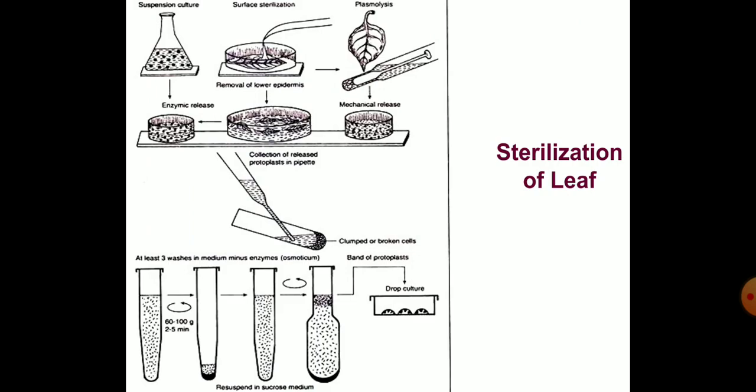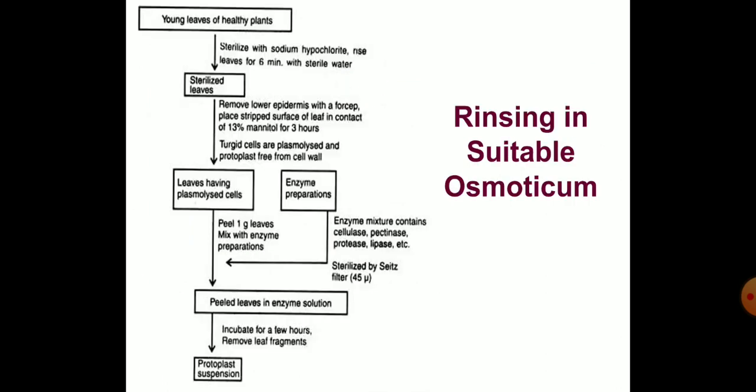Sterilization of leaf sample: matured leaves are collected from healthy plants, washed in tap water to remove soil particles, and sterilized with sodium hypochlorite solution. After 10 minutes, the sample is properly washed with sterile distilled water. Washing should be done about 10 to 6 times to remove traces of sodium hypochlorite.